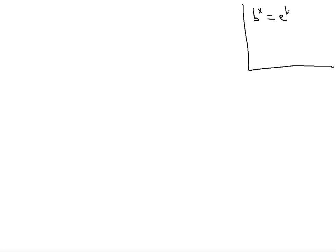The reference we're going to use for the first method will be the fact that b to the x can be written as e to the ln b, to the x, and that can be equal to e to the x ln b.